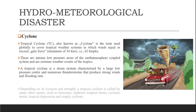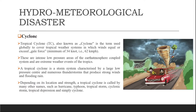Depending on its location and strength, a tropical cyclone is called by many other names such as hurricane, typhoon, tropical storm, cyclonic storm, tropical depression, and simply cyclone. Tropical cyclones can produce extremely powerful winds, torrential rain, high waves, and damaging storm surges. They develop over large bodies of warm water and lose their strength if they move over land — this is the main reason coastal regions receive significant damage.